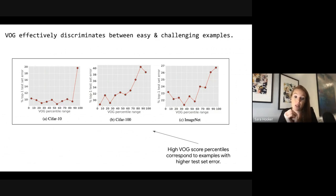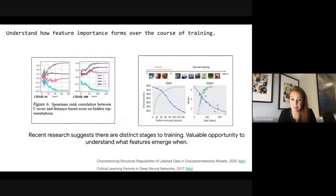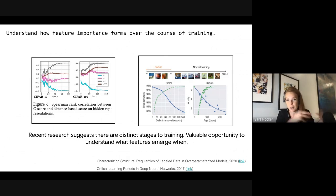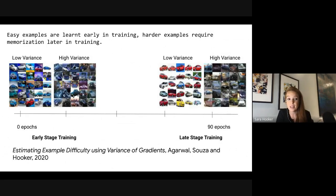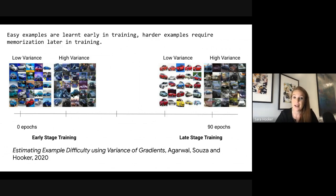VOG effectively discriminates between easy and challenging examples — high VOG scores correspond to examples with higher test set error. This is also a richer research direction: understanding how feature importance forms over training reveals distinct stages. Easy examples are learned early on; harder examples require memorization for most of training. We see crystallization of frequent features in very early stages, and the rest of training is memorization of rare features. This also allows us to think about adaptive training — leveraging early signal to change how we use model capacity and spend more time on difficult examples.